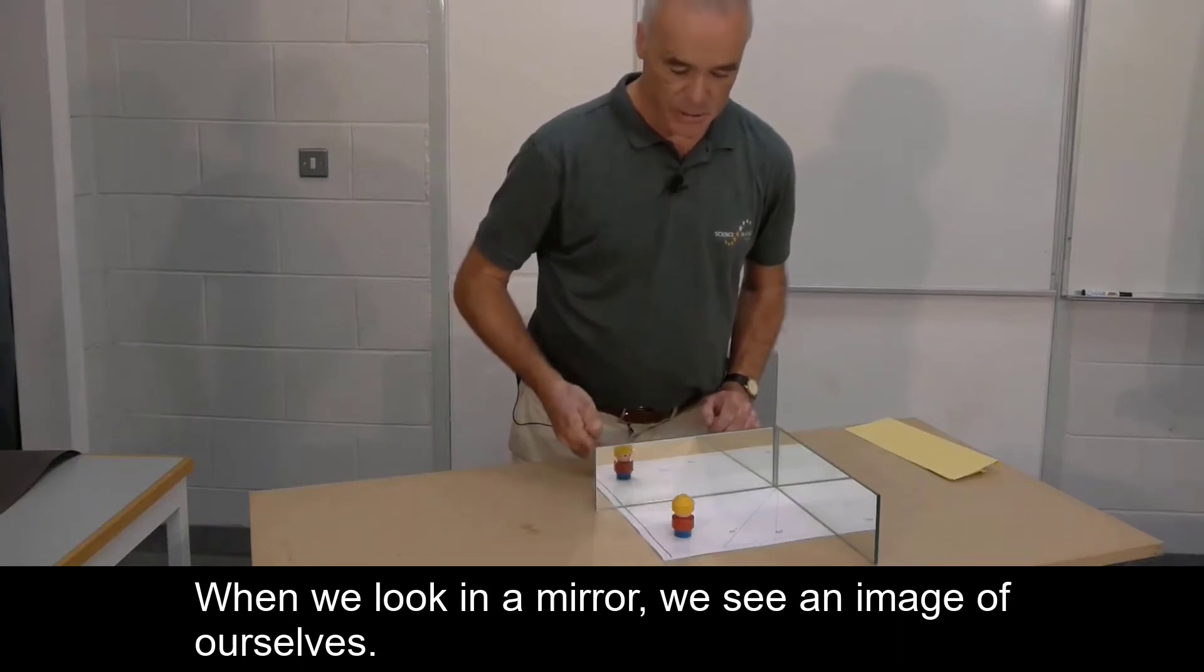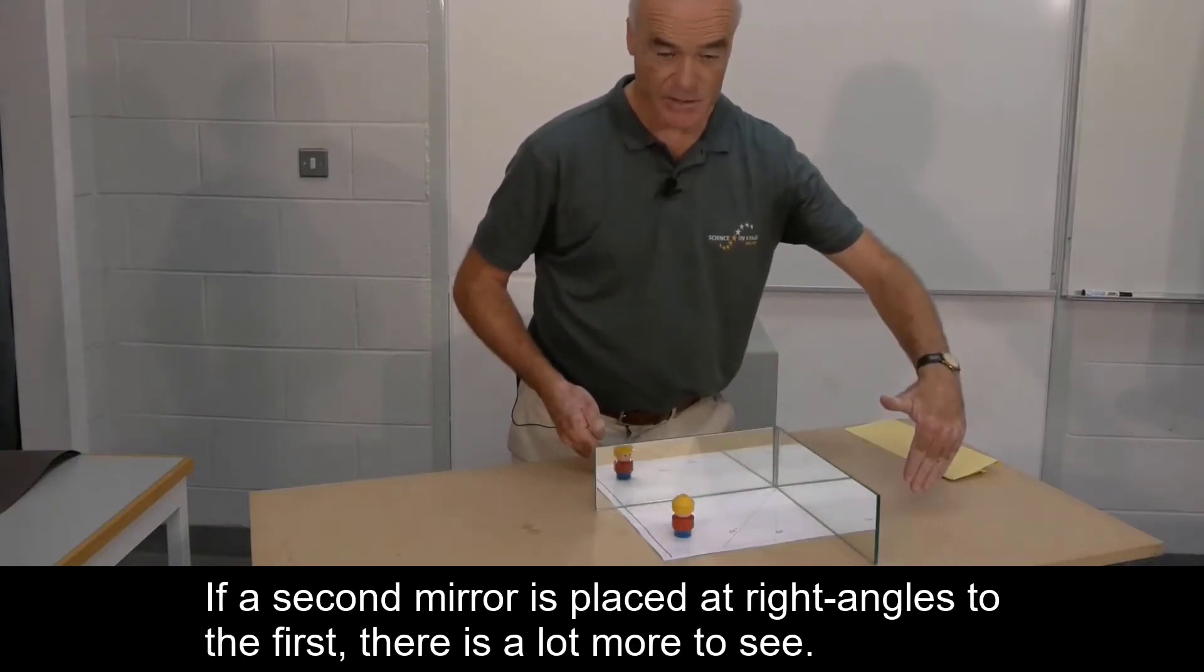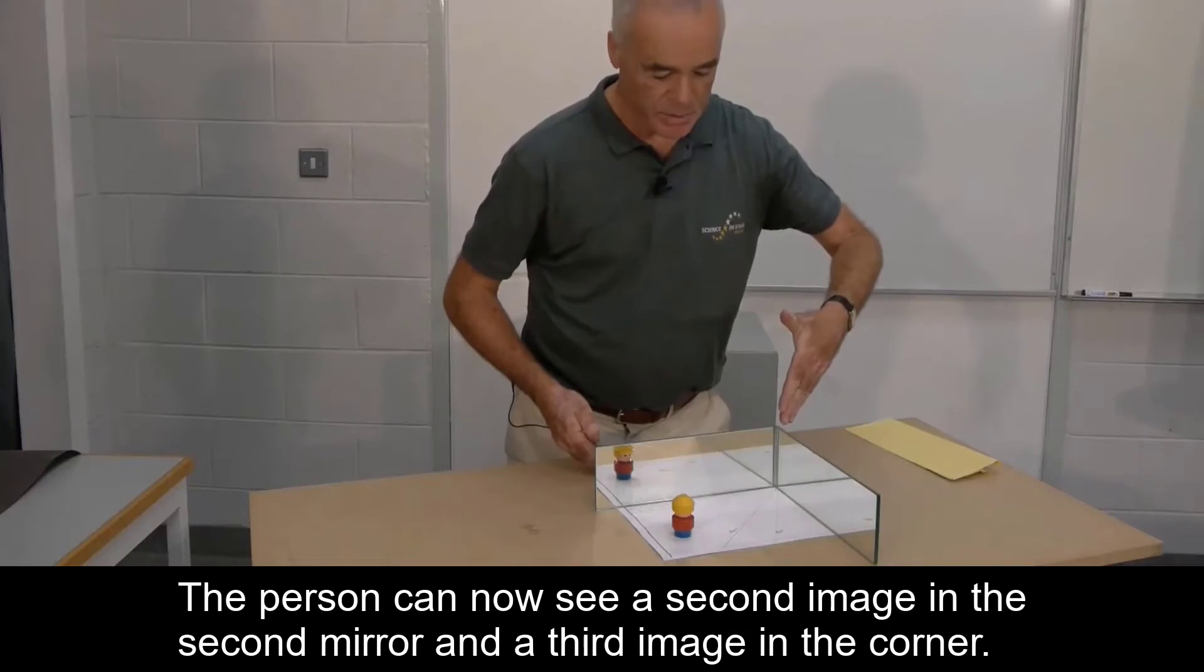When we look in a mirror, we see an image of ourselves. If a second mirror is placed at right angles to the first, there is a lot more to see. The person can now see a second image in the second mirror and a third image in the corner where the two mirrors meet.